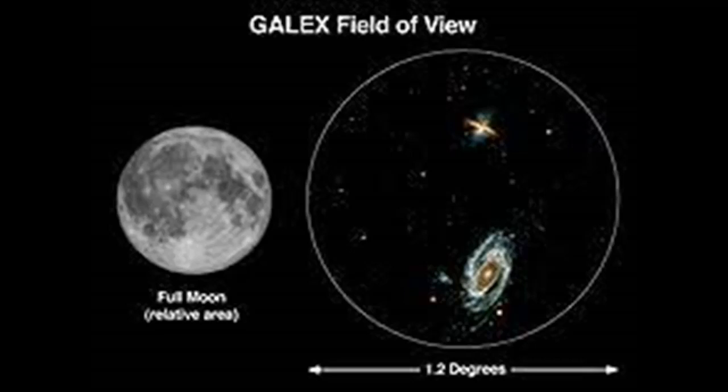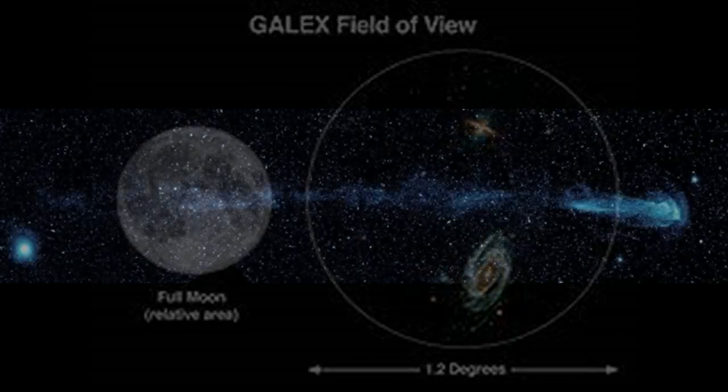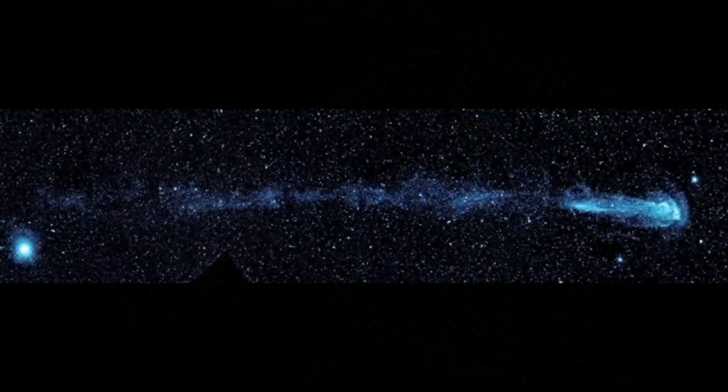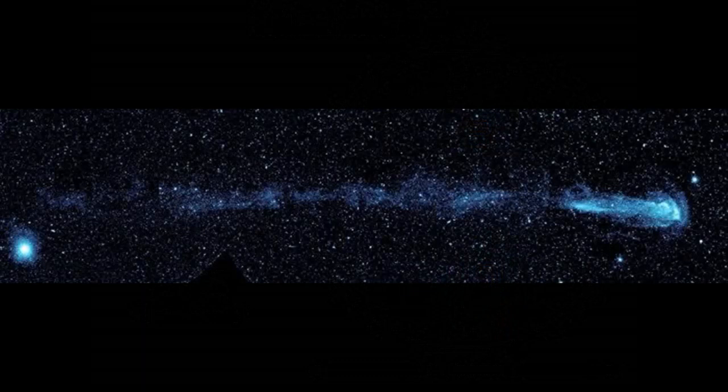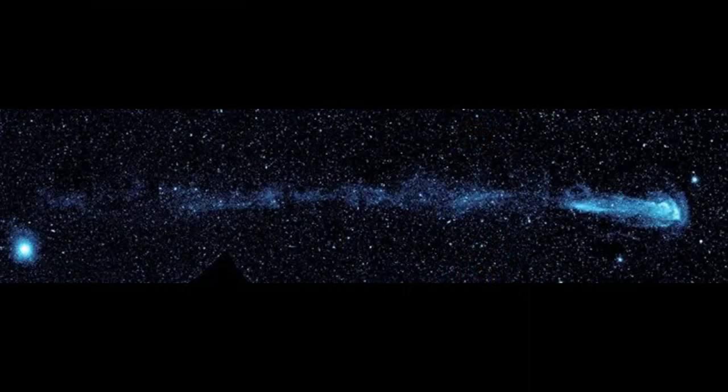Only the ultraviolet images helped to reveal its existence. The length of Mira's tail is almost 13 light years, that's three times the distance between the Sun and Proxima Centauri. As mentioned above, Mira's tail was formed as a result of the process of discarding the star's materials due to its high speed of movement. Every 10 years the star loses about as much material as the mass of our Earth.